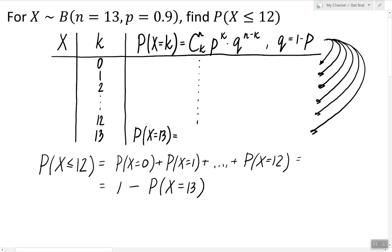So the probability of X being equal to 13 equals 13 choose 13, times 0.9 to the power 13, times 0.1 to the power 0. Computing this is just a matter of plugging in these values in a calculator.